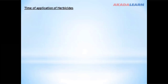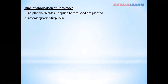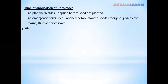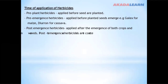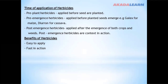Time of application of herbicides: Pre-plant herbicides are applied before the seeds are planted. Pre-emergence herbicides are applied before planted seeds emerge. Post-emergence herbicides are applied after the emergence of both crops and weeds. Benefits of herbicides include: easy to apply, fast in action, cover large areas of land, and save labor.